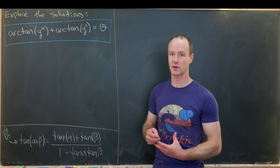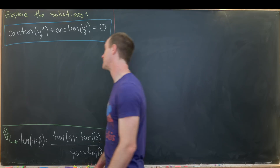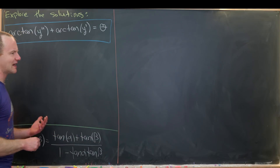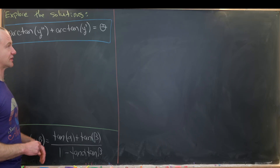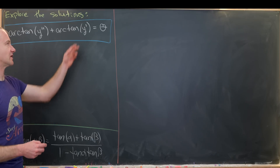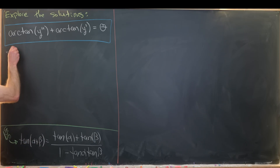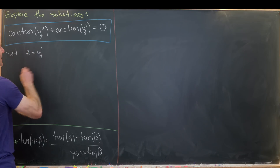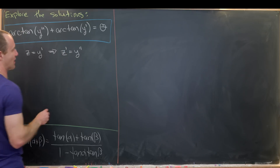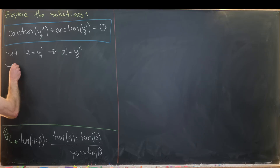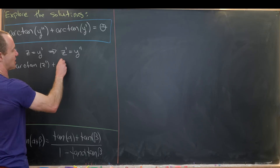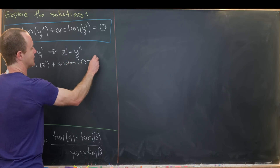Let's get to the setup first before we look at our special cases. Since we have y'' and y' but no y, we might as well think of this as a first-order differential equation where the dependent variable is y'. We do that carefully by setting z = y', which means z' = y''. Thus our equation becomes arctan(z') + arctan(z) = θ.